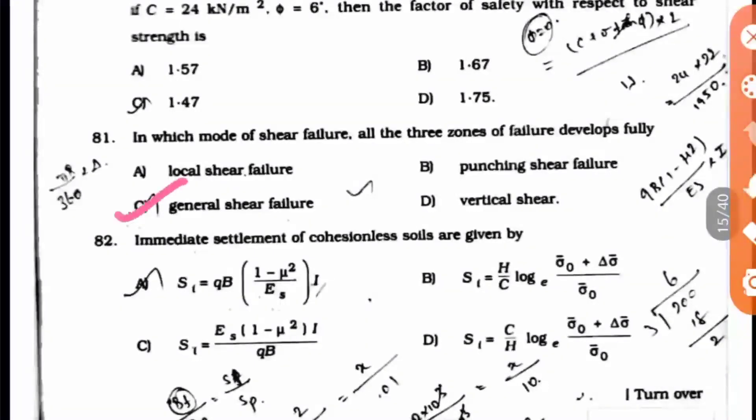Option C is the right answer, that is general shear failure. The next lower category is local shear failure, and after that comes punching shear failure.